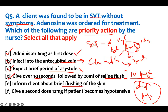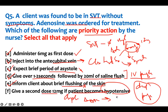Inform the client about brief flushing of the skin — adenosine is a vasodilator that dilates vessels and causes facial flushing, which is an expected finding. However, giving a second dose of 12 mg if the patient becomes hypotensive is incorrect — hypotension, diaphoresis, and altered mental status are symptoms requiring immediate synchronized cardioversion, not a higher adenosine dose. Therefore, options A, B, C, D, and E are priority interventions.